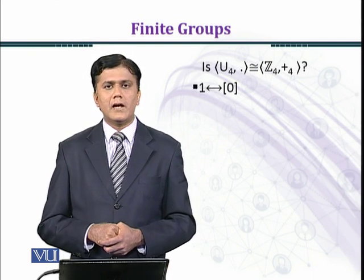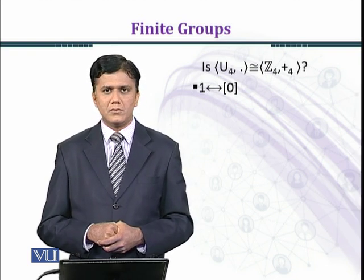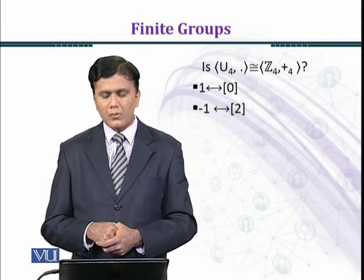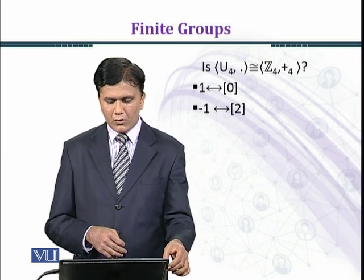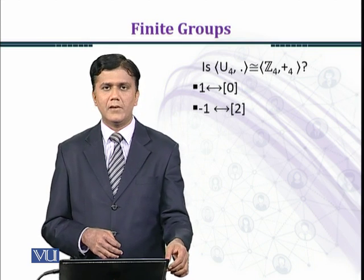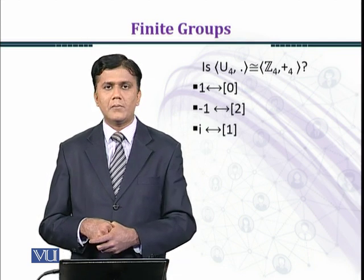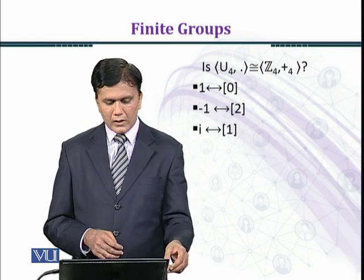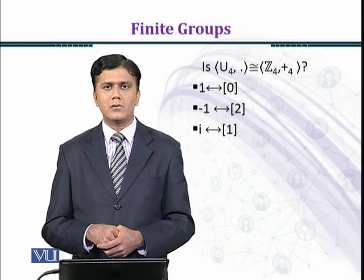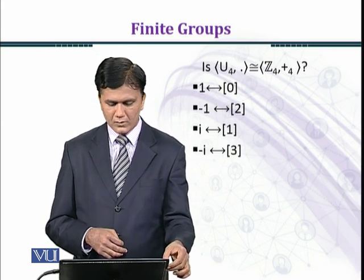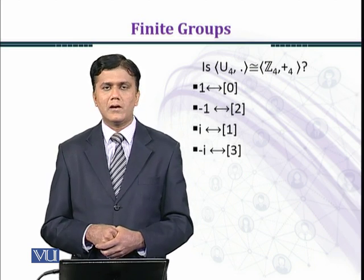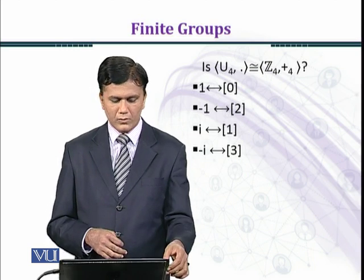The identity element 1 of U4 corresponds to class 0, the identity element of Z4. -1 corresponds to class 2 — the order of class 2 is 2 and the order of -1 is 2, so both elements play the same role. iota corresponds to class 1; iota completely generates U4 and class 1 also completely generates Z4.